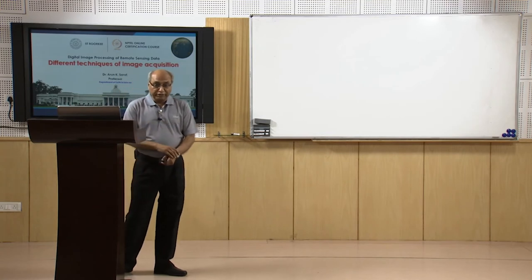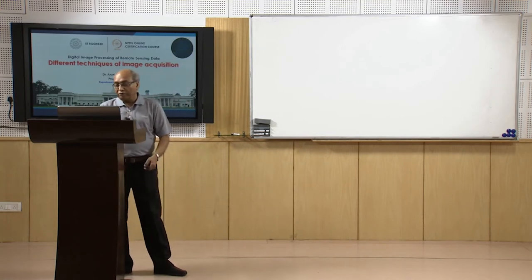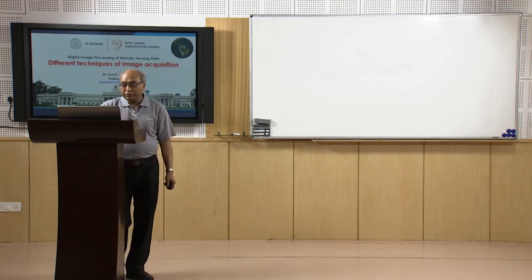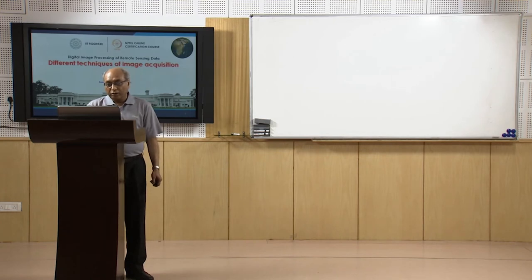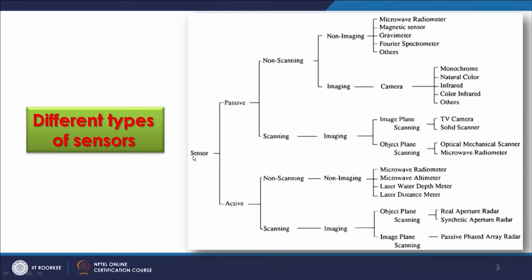Now, regarding acquisition by satellite, there are various types of sensors that exist or have been used earlier. The major difference starts from the sensors — there are two types: passive sensors and active sensors. Passive sensors are those for which you do not require any external energy; natural energy is more than sufficient to acquire the images.